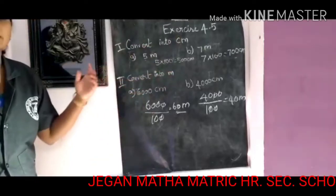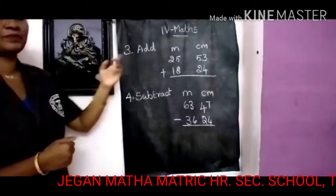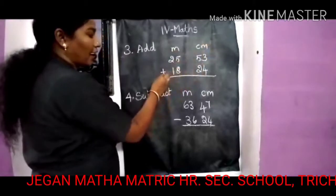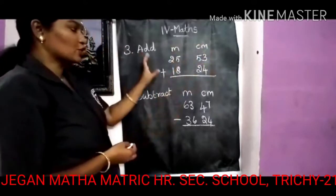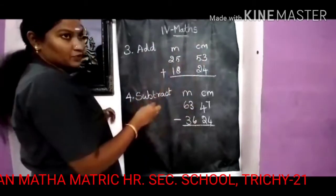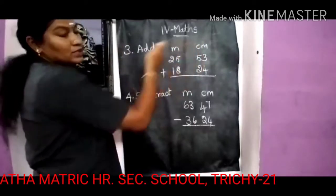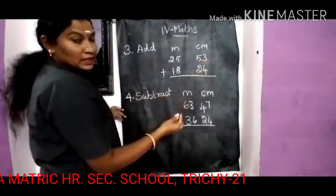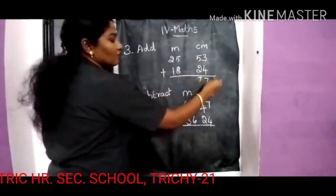Now let's see Roman numeral 3: addition. The problem is 25 meter 53 centimeter plus 80 meter 24 centimeter. First start on the centimeter side: 3 plus 4 is 7, and 5 plus 2 is 7, so 77 centimeter. Now meter side: 5 plus 8 is 13, write 3 and carry 1. Then 1 plus 2 is 3, and 3 plus 1 is 4, so 4 meter.